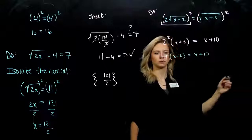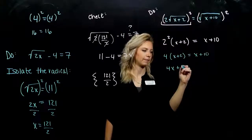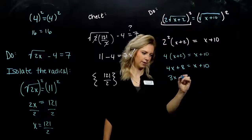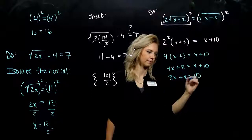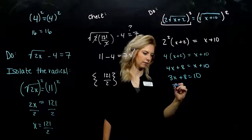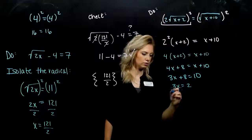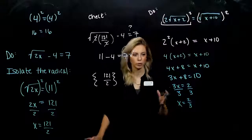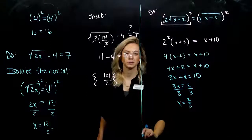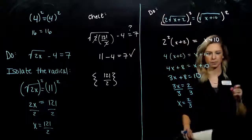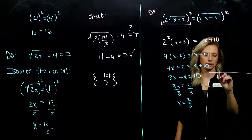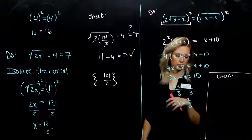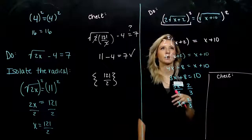We need x on its own, so I've got to distribute the 4 and get my x's together. I'm going to subtract x — I've got 3x over here. Next, 8 has to move, so 3x is equal to 2. We need x on its own, so x is 2 thirds. That's the proposed solution. But in the end, we always want to check to make sure. It's not going to be as quick as our last version, but that's okay — we still need to perform this, and it's extra practice with evaluating radicals.